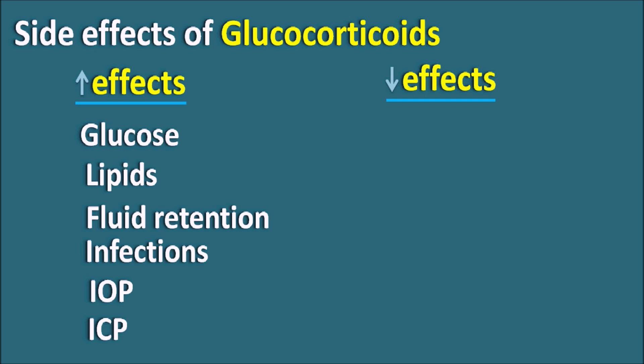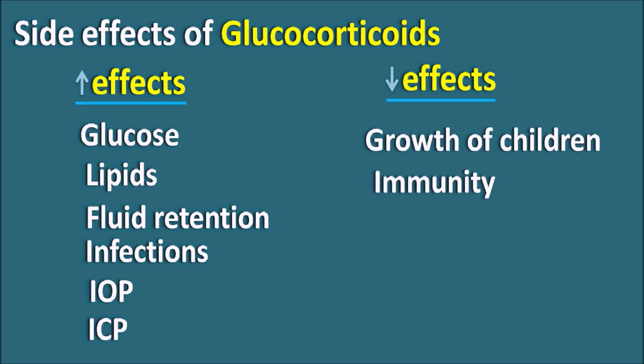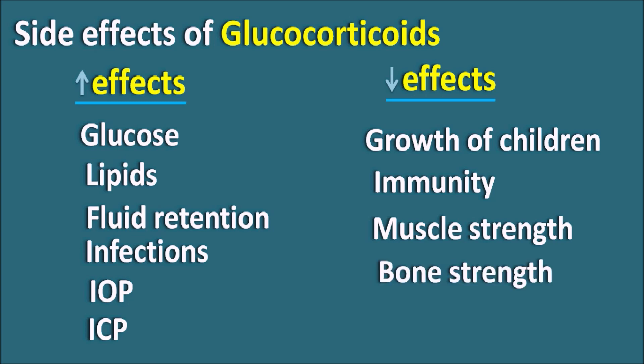Glucocorticoids can reduce growth in children. They also reduce immunity, increasing the risk of infections. They can reduce muscle strength, producing muscle weakness, and bone strength is also reduced by glucocorticoids. In this way, the effects of glucocorticoids can be classified into these two types.